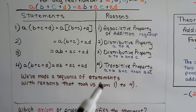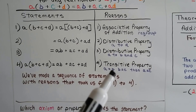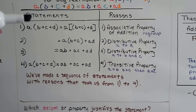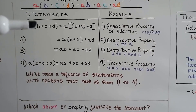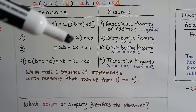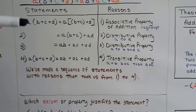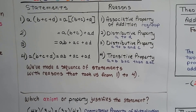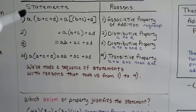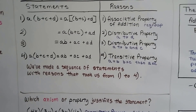We end up proving that a times (b + c + d) equals ab + ac + ad, which is what we were trying to prove. The final reason is the transitive property: if a equals b and b equals c, then a equals c. Because statement one equals statement two, which equals statement three, which equals statement four, they're all equal to each other. We made a sequence of statements with reasons, and supported each one.